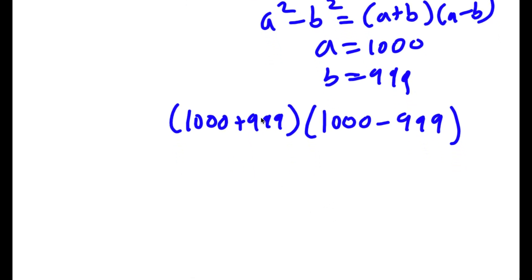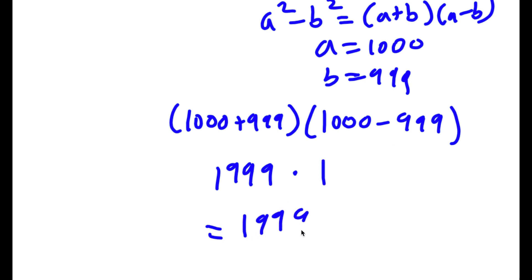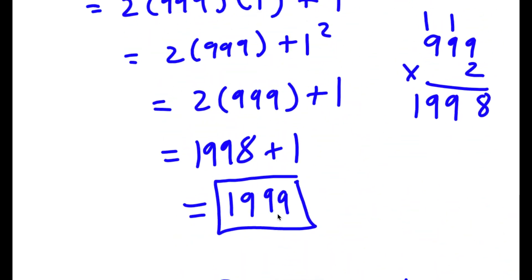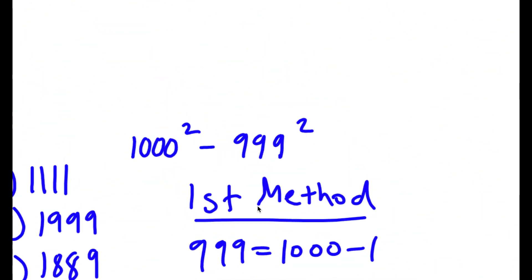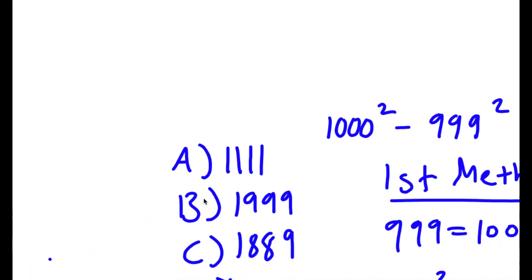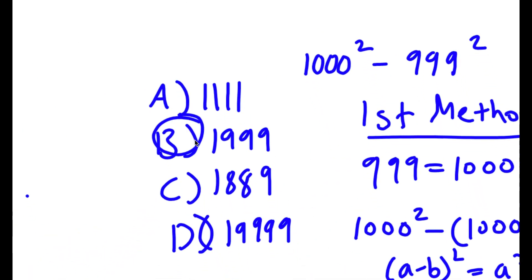Now, 1,000 plus 999 equals 1,999, and 1,000 minus 999 is simply 1. So this equals 1,999 times 1, which is 1,999. The correct answer choice is B.